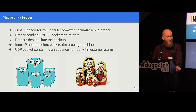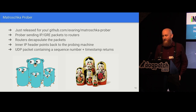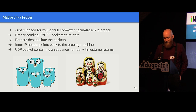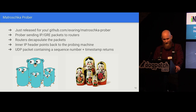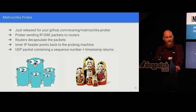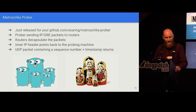I implemented this software roughly one year ago and released it at around DNOG 10, where I also gave this presentation. There's a longer video recording with more detail. The software is a prober sending IP and GRE packets to routers; routers decapsulate the packets, the last IP header points back to the probing machine, there's a UDP packet containing a sequence number and timestamp, and it comes back. I call it the MatroskaProber because GRE packets are packed inside GRE packets — like Matryoshka dolls. It's implemented in Go, of course.